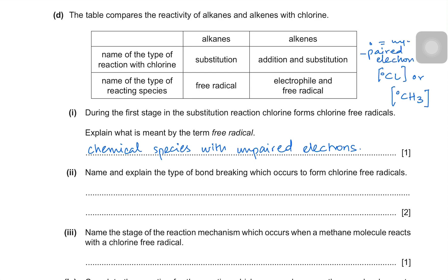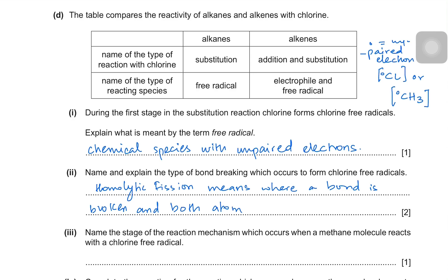Name and explain the type of bond breaking which occurs to form chlorine free radicals. The answer is homolytic fission — a bond is broken and both atoms each receive one electron. There is no positive or negative charge formed; instead we get radicals.